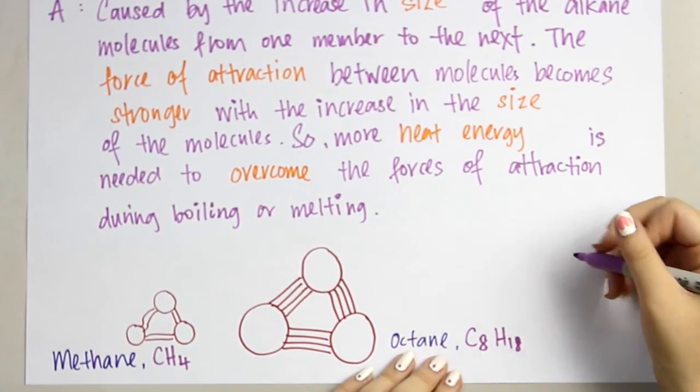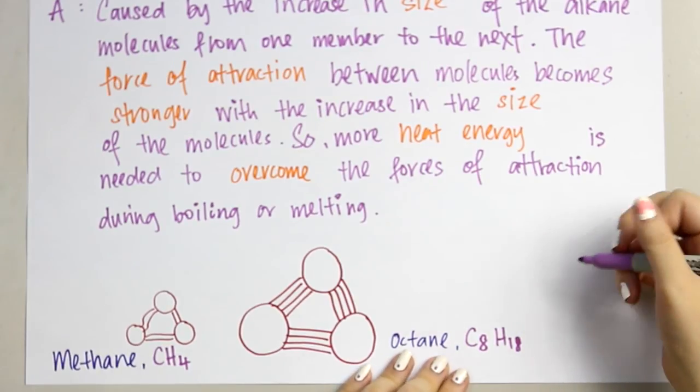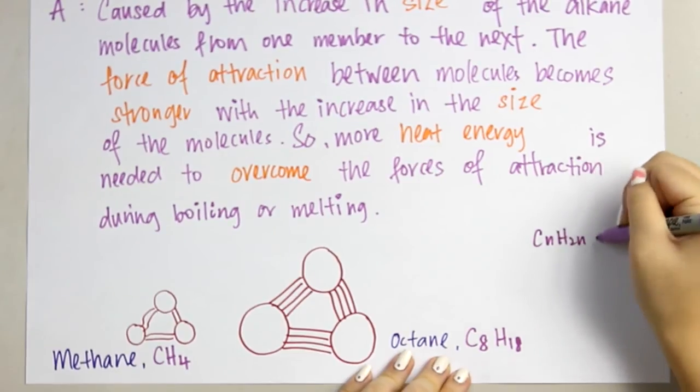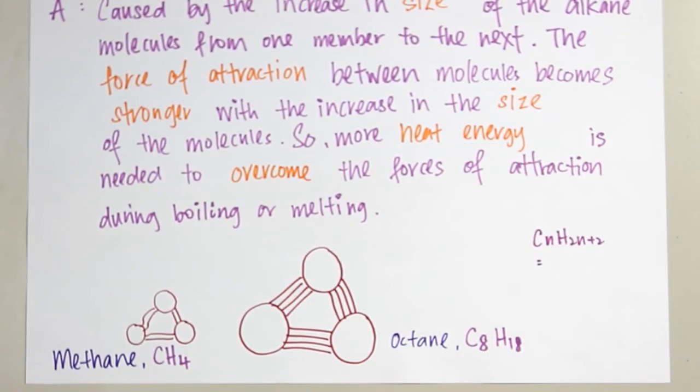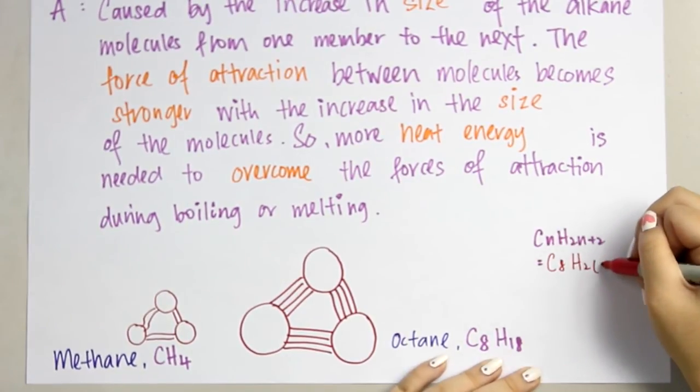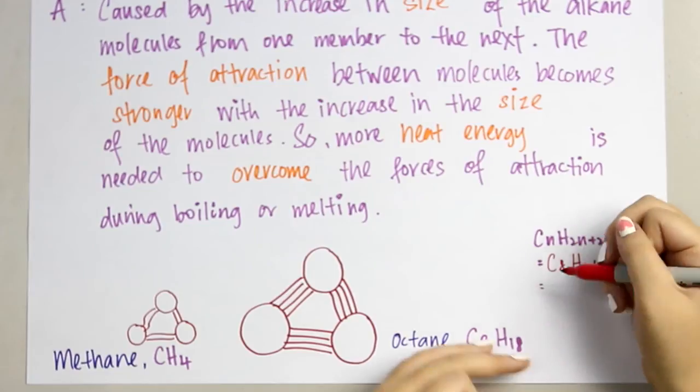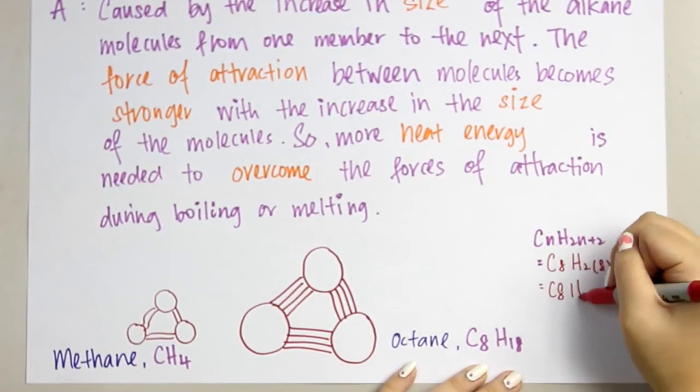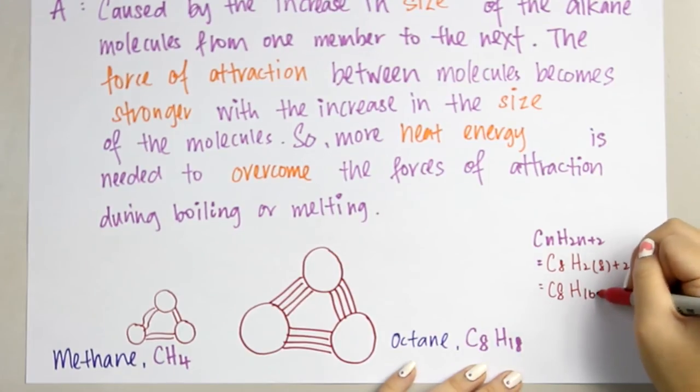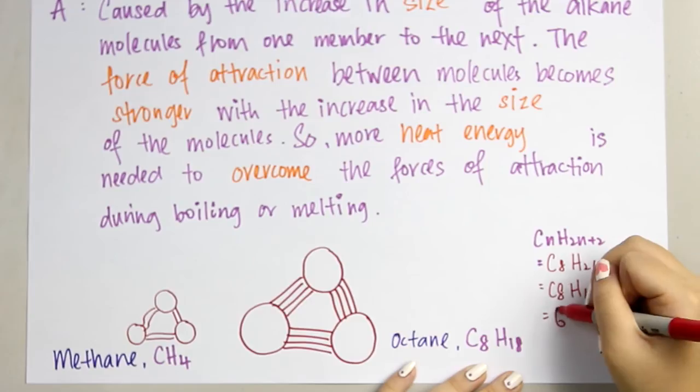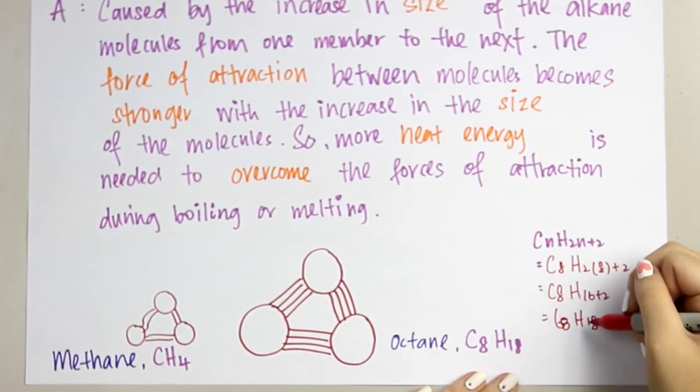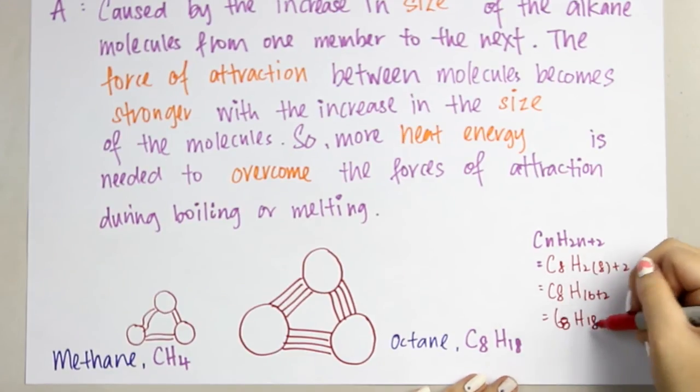Octane has eight number of carbons, so substitute into the formula CnH2n+2. We will get 2 multiplied by 8 is 16, plus 2 is 18. Therefore, we get the formula for octane is C8H18.